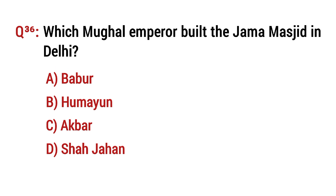Question number 36: Which Mughal emperor built the Jama Masjid in Delhi? The right option is D: Shah Jahan.